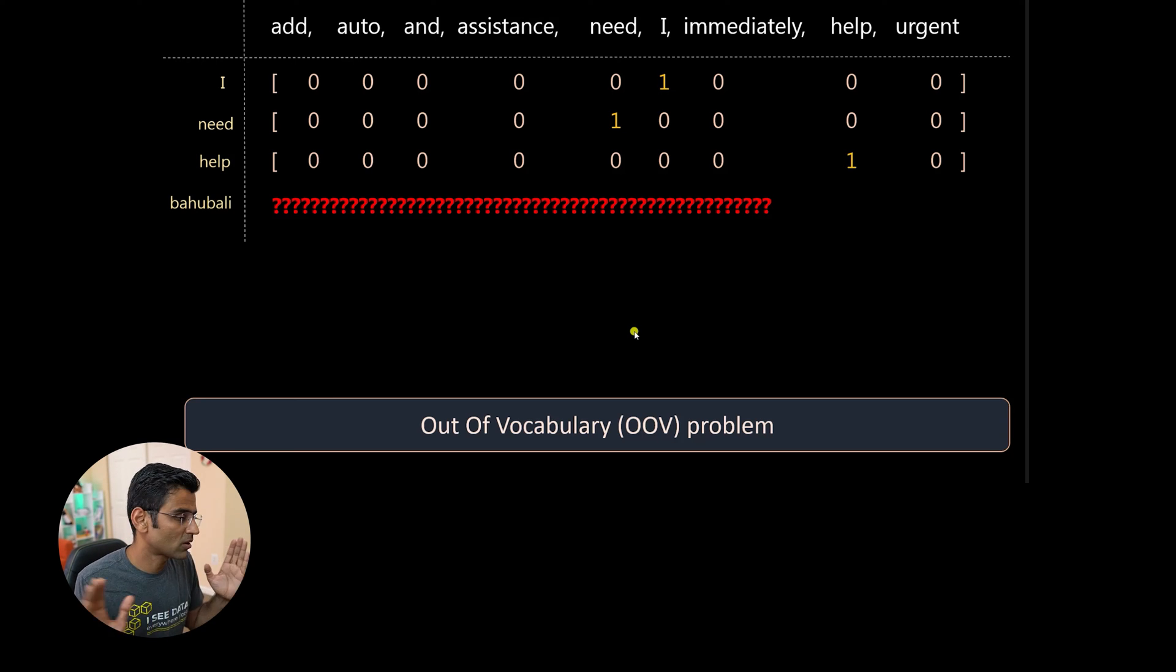And by the way, the last memory problem that I talked about applies to one hot encoding, not label encoding. But see, these two approaches are dumb, basically. Label encoding, one encoding, dumb way of representing text into numbers.